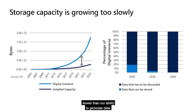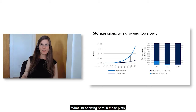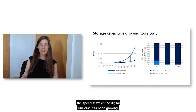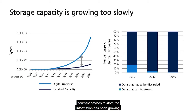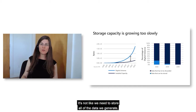Let's start with a problem. Storage capacity is growing a lot slower than our ability to generate data. What I'm showing here in these plots — on the left-hand side, I'm showing a study by IDC showing the speed at which the digital universe has been growing. The bottom curve is how fast devices to store the information has been growing. As you can see, the gap has been increasing, and we think that's a problem.